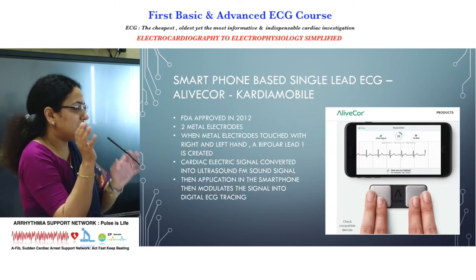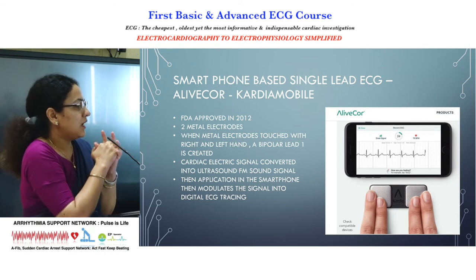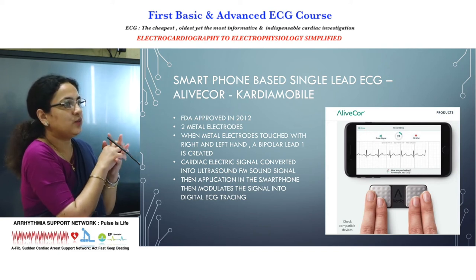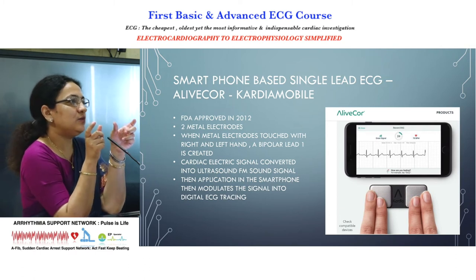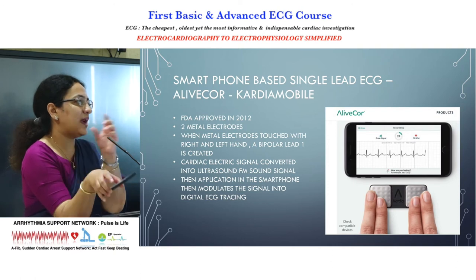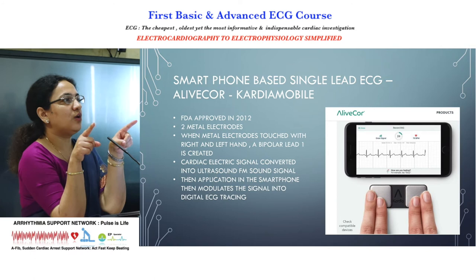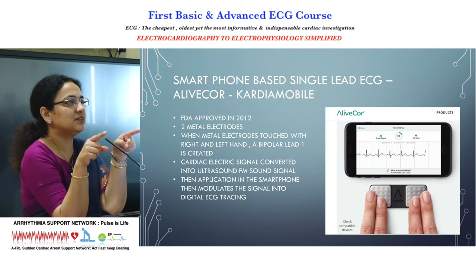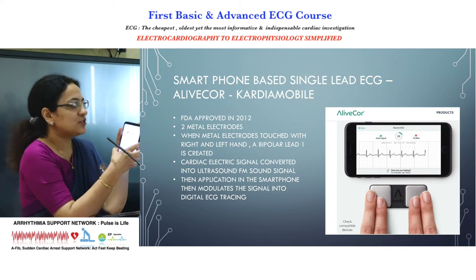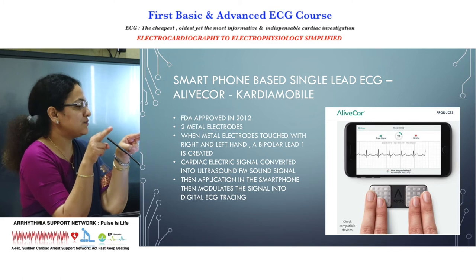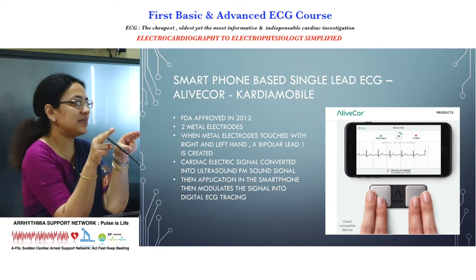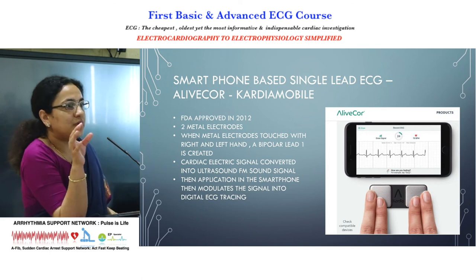The other technology that records an actual ECG was started by LifeCore, now known as Cardia Mobile or Cardia Band. It received FDA approval in 2012. It provides two metal electrodes that you can attach to the back of your phone cover or carry as a card. You keep your right and left fingers on the electrodes, giving you a Lead 1 ECG. It transmits signals as ultrasound, which are converted to a digital ECG tracing displayed on the app.